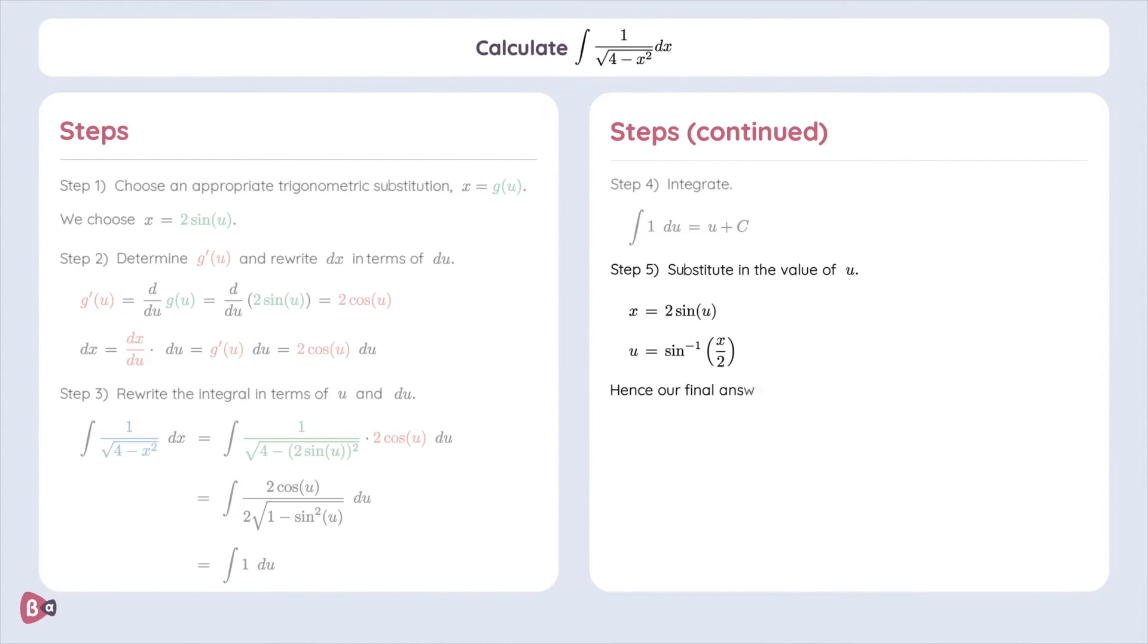Now insert that into u and we get our final answer for the integral of 1 over square root of 4 minus x squared dx.